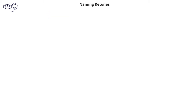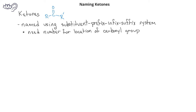Ketones are a type of carbonyl compound that has the carbonyl group in the middle of the carbon chain somewhere. That means that they are different from the other carbonyl compounds in that we will need to indicate the location of the carbonyl carbon in the carbon chain. We still use the same substituent, prefix, infix, suffix naming system that we've used for all the other carbonyl compounds. We change the suffix for ketones from an E for hydrocarbons to ONE for ketones.